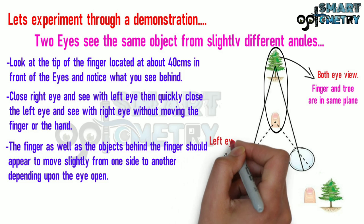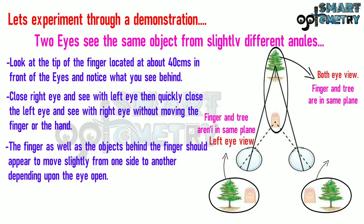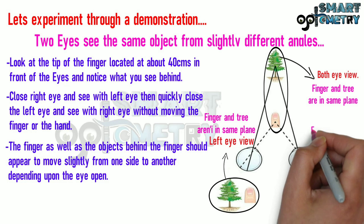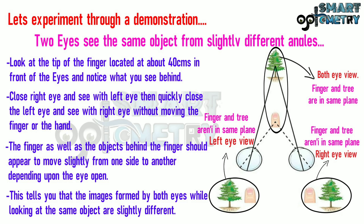This is the left eye view where the finger and the tree aren't in the same plane. Even in the right eye view, the finger and the tree aren't in the same plane. This tells you that the images formed by both eyes while looking at the same object are slightly different.